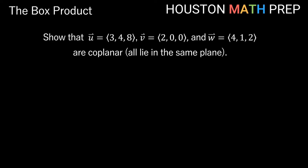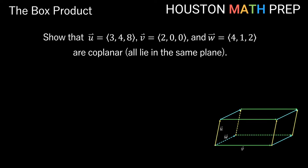Here's one final example: we want to show that vectors u, v, and w are coplanar — in other words, they all lie in the same plane. Two non-parallel vectors define a plane, so two of these define a plane. If u lies in the same plane as v and w, it gives no height to our parallelepiped box. A box with no height has no volume, so we should expect to get a box product of zero — one dimension will be zero if all three vectors lie in the same plane.